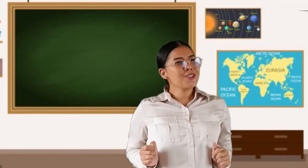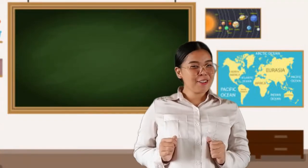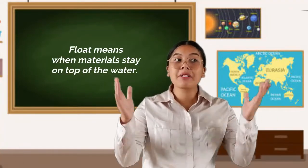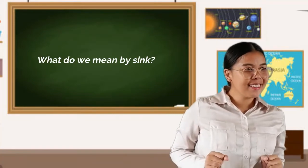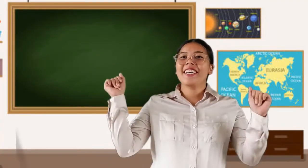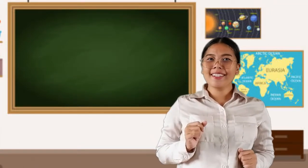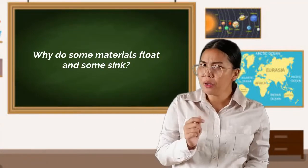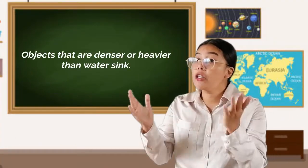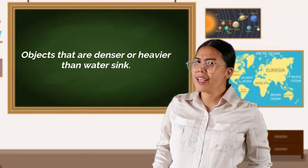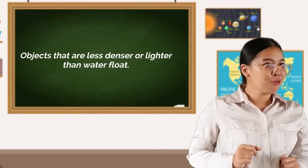So kids, based on our activity, what do we mean by float? Float means when materials stay on top of the water. But how about sink? Sink means when materials fall to the bottom of the water. What do you think is the reason why some materials float and some sink? Objects that are more dense or heavier than water tend to sink, while objects that are less dense or lighter than water tend to float.